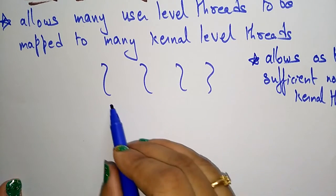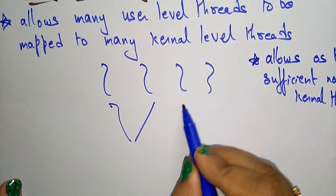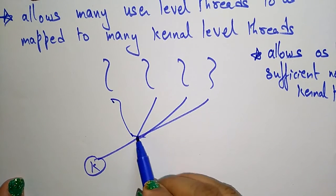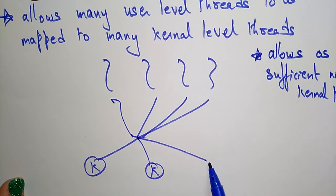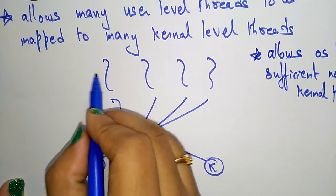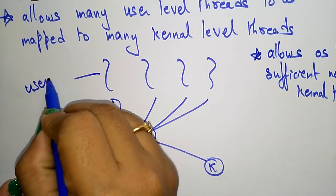These many user level threads are communicating with many kernels. So this is a common point. Here, these are the user level threads and these are the kernel level threads.